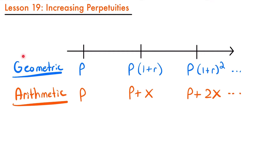An increasing perpetuity could be a geometric perpetuity where each payment increases by a particular rate r, or it could be an arithmetic perpetuity where you start with a payment of p and it increases by a set amount x every period thereafter. We're going to start by looking at how to calculate the present value of a perpetuity with an increasing geometric progression, and then we will look at an increasing perpetuity with an arithmetic progression.